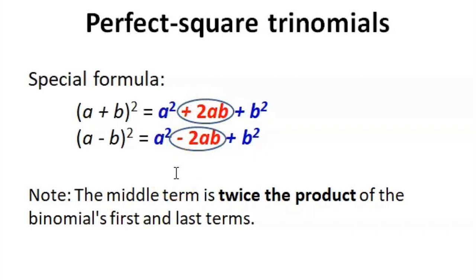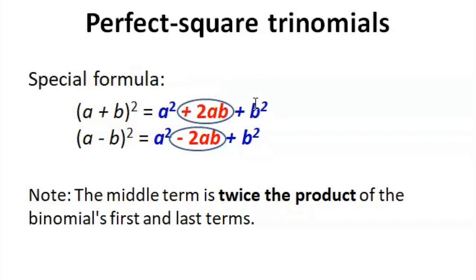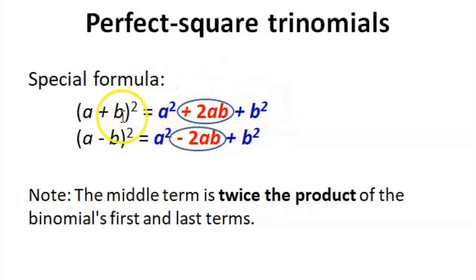There are two situations here. When you are given a square of a binomial, if you distribute or expand it, the result is the perfect square trinomial. And if you are asked to get the factor of the perfect square trinomial, the answer is the square of a binomial.